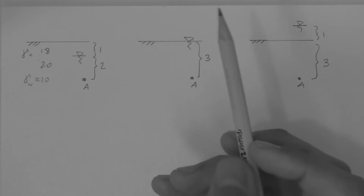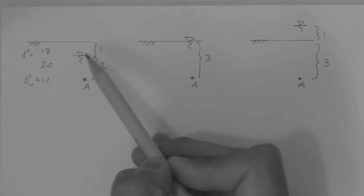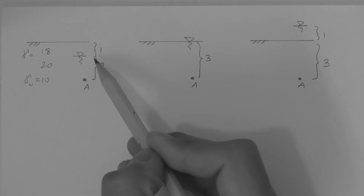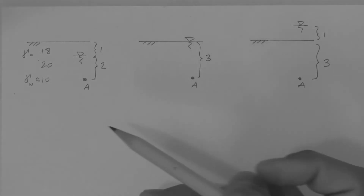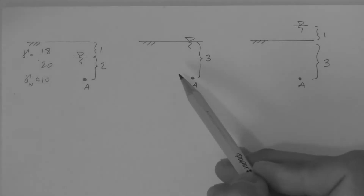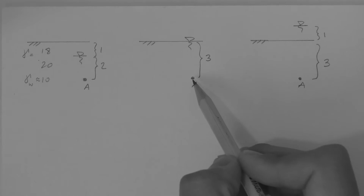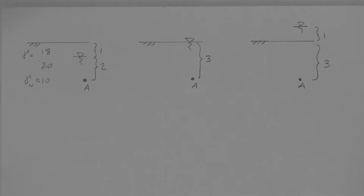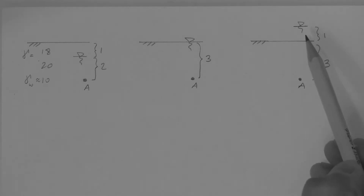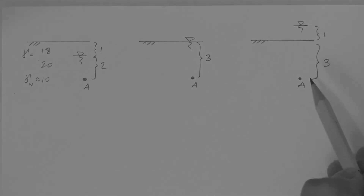Here we have three profiles. In the first profile, the water table is located one meter below the ground and point A is located two meters below that, so point A is located three meters below the ground surface. In the second profile, the water table is located on the ground surface and the point is again located three meters below the ground surface. In the third profile, the water table is located one meter above the ground surface and the point is again located three meters below the ground surface.